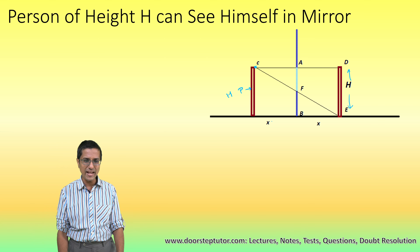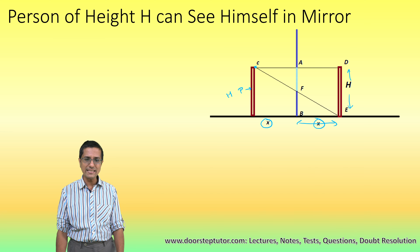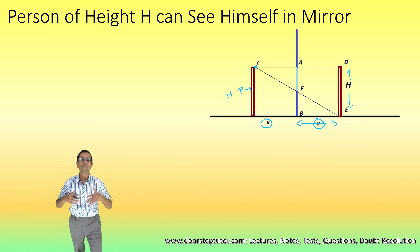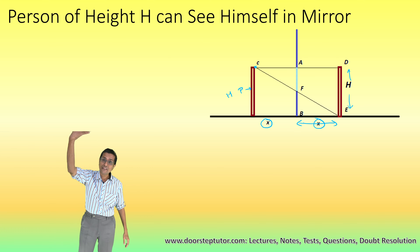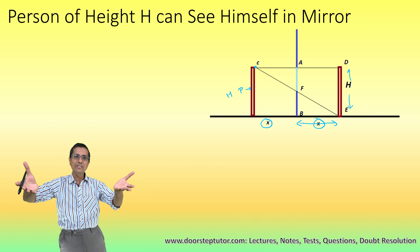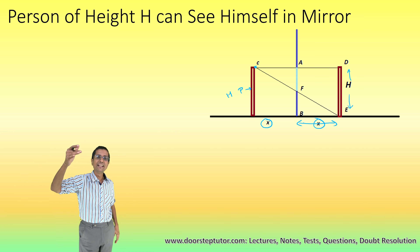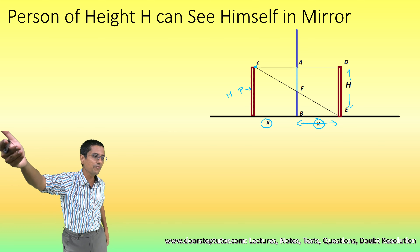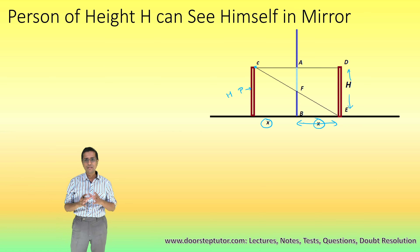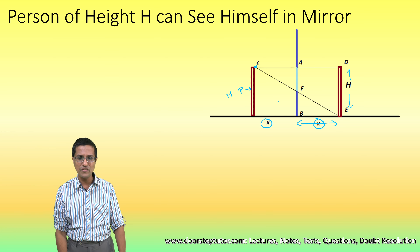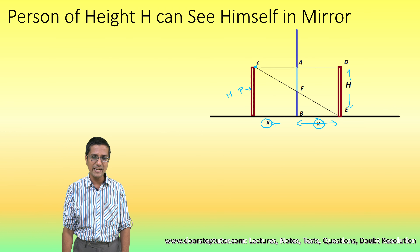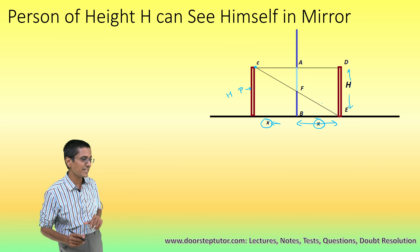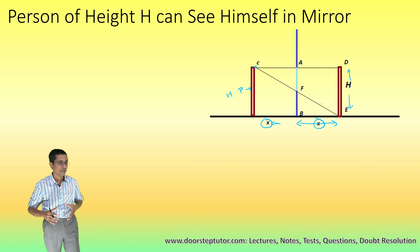If the person is standing at a distance x from the mirror, the image would form x distance inside the mirror. The image is actually formed on the other side of the mirror — the mirror person is standing on the other side, the same distance inside as you are standing outside. These are the known properties of a plane mirror.